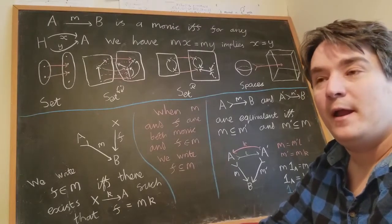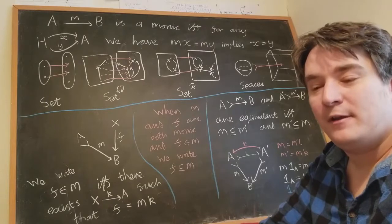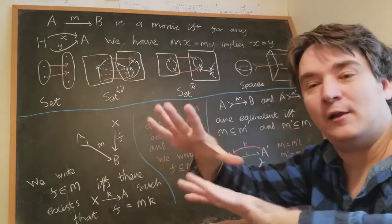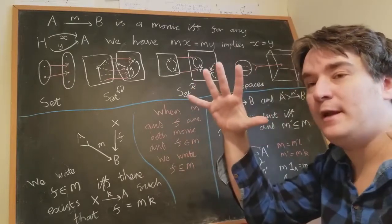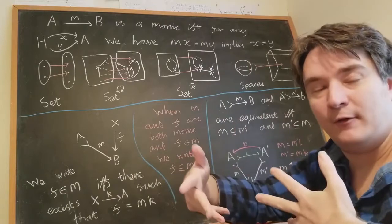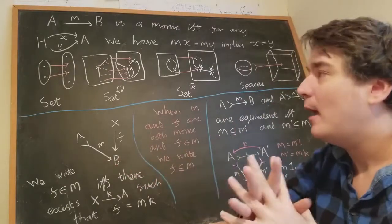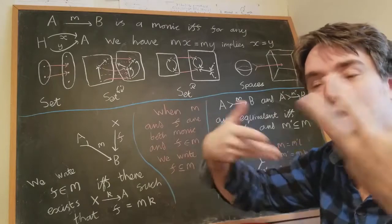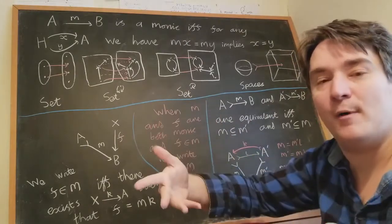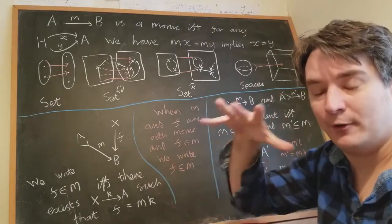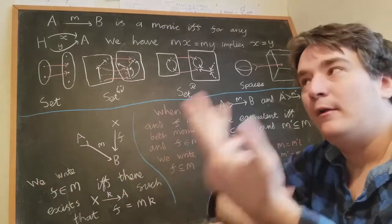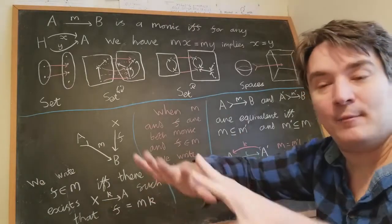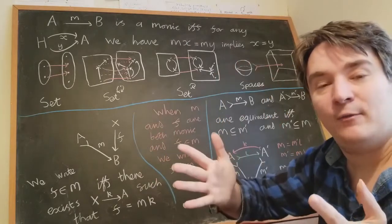Topos theory is basically category theory where you assume there are certain special categorical structures like sub-object classifiers, which allow you to study the properties of sub-objects and monomorphisms. Topos theory is very useful for studying particular categories — for example, the category of dynamical systems is a topos, and you can use results from topos theory to apply your set theory intuition to talk about what's going on in dynamical systems in a very succinct way.